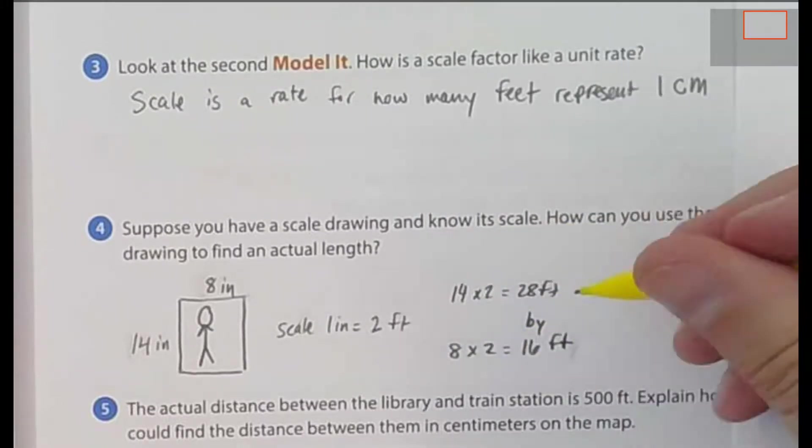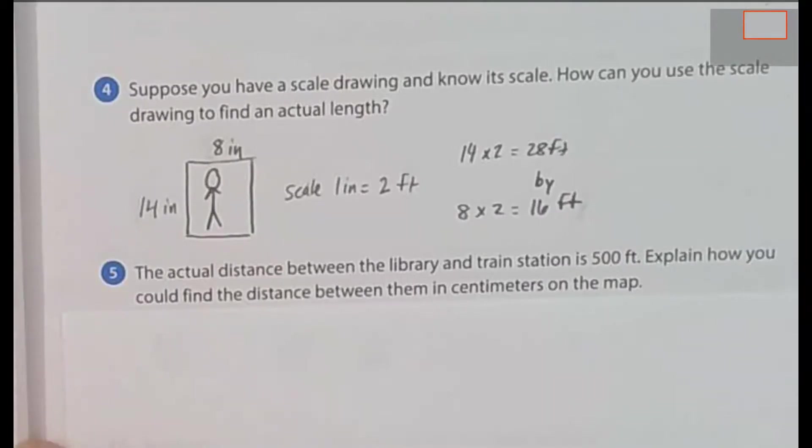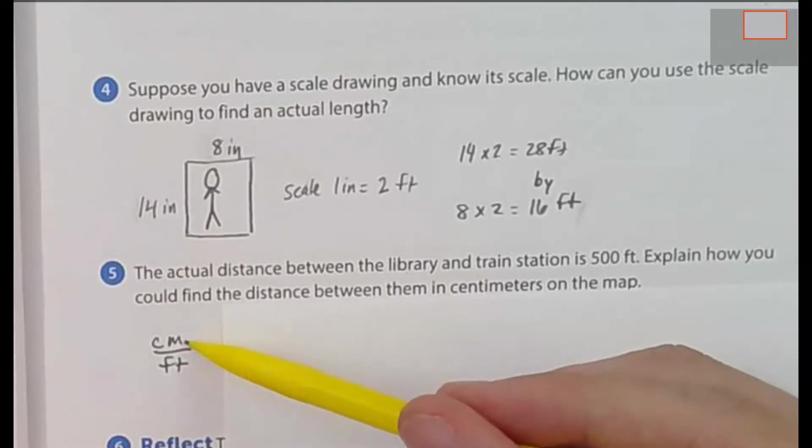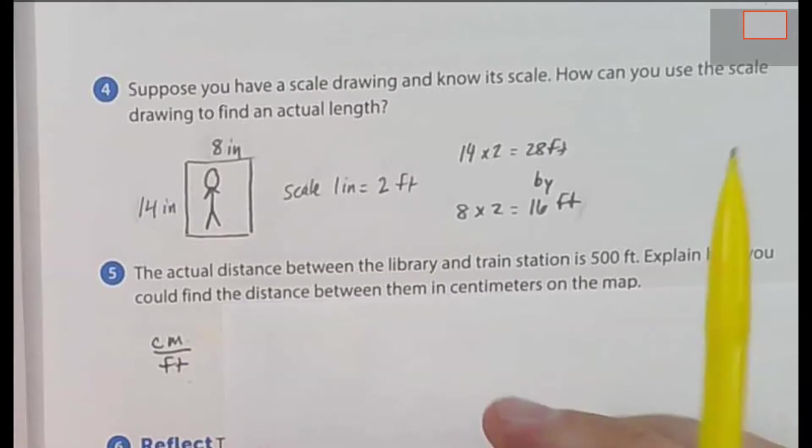Finally, we've got the actual distance between the library and train station is actually 500 feet. So our scale was off. Explain how you could find the distance between them in centimeters on the map if we had to redraw that. So just ask yourself, what are you comparing? Well, you're comparing centimeters and feet. So write that as a fraction, centimeters over feet. Then you're asking yourself, what's my scale factor? Well, my scale factor is 1 centimeter is equal to 250 feet.